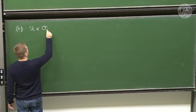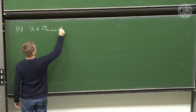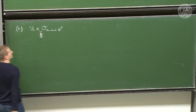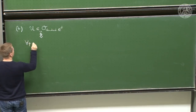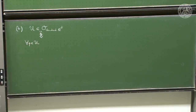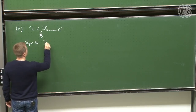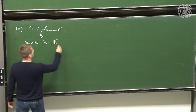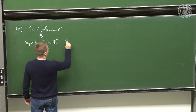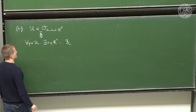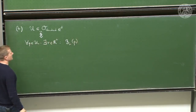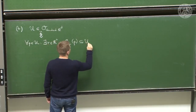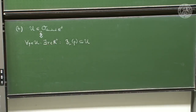Step 2: a set U lies in the standard topology O_standard on R^d by definition if and only if for every point p in U, there exists a positive real number r in R_+ such that the ball B(p, r) lies entirely within the set U. That's the definition.